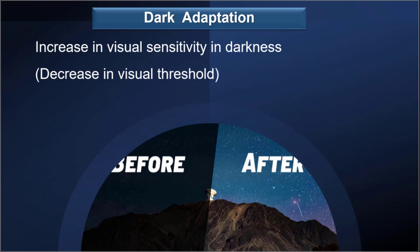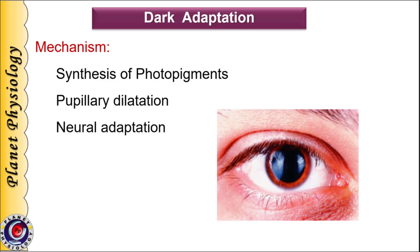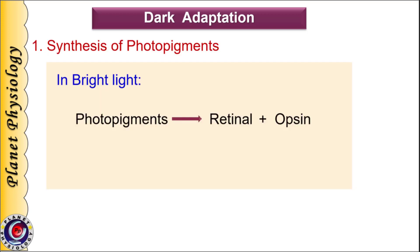This adaptation takes place by three mechanisms: synthesis of photopigments, pupillary dilatation, and neural mechanism. When a person spends sufficiently long time in bright light, most of the photochemicals in rods and cones are reduced to all-transretinal and opsin. Much of the retinal is further converted to vitamin A and stored in pigmented epithelium. As rods are now completely bleached in bright light, they lose their sensitivity to light.